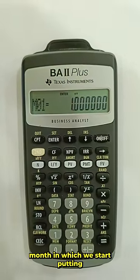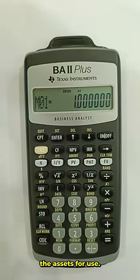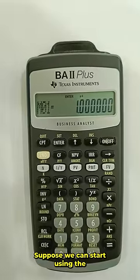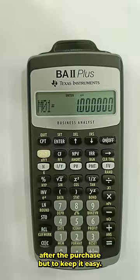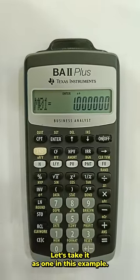This tells us the month in which we start putting the asset for use. Suppose we can start using the asset from the fifth month after the purchase. But to keep it easy, let us take it as 1 in this example.